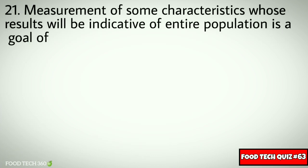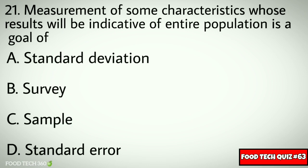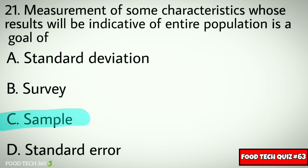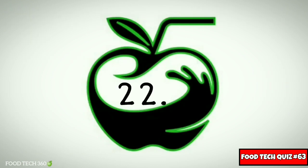Question No. 21. Measurement of some characteristics whose results will be indicative of the entire population is a concept of: Options: A. Standard Deviation, B. Survey, C. Sample, D. Standard Error. Correct answer: C. Sample.